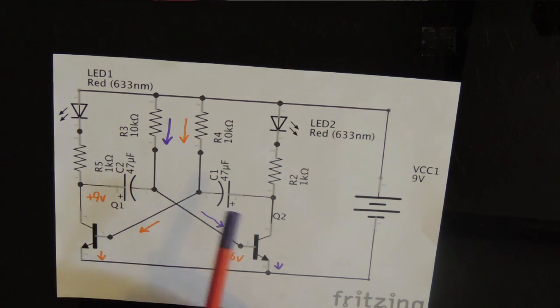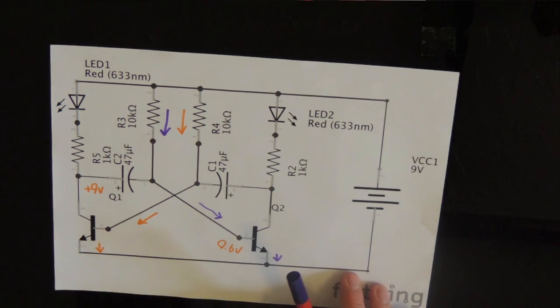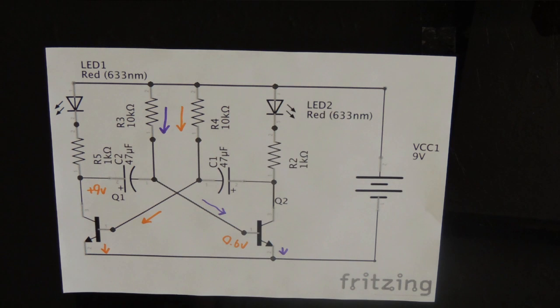We can assume that each of these capacitors charge up towards 9V. Eventually, one of these two transistors will turn on. Theoretically, both of them should turn on, but in practice, only one of them will because not all parts are created equally.